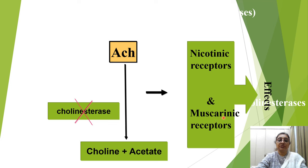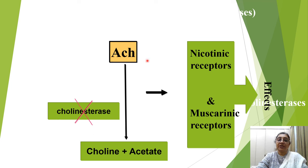The mechanism of anticholinesterases involves inhibiting the enzyme cholinesterase, which would normally hydrolyze acetylcholine into choline and acetate. By inhibiting this enzyme, acetylcholine remains at the site of action at both nicotinic and muscarinic receptors, and its lifespan and effect are increased.